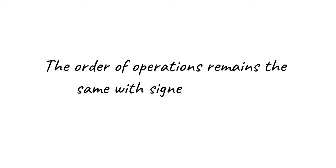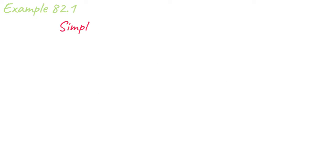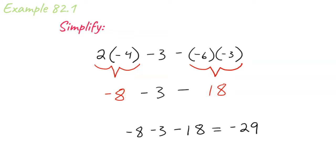The order of operations remains the same when we have signed numbers. In example 82.1, we have some multiplication that has to happen first. So we do all of that and we get negative 8 minus 3 minus 18 and an answer of negative 29.